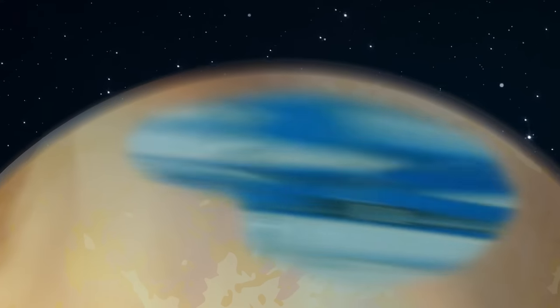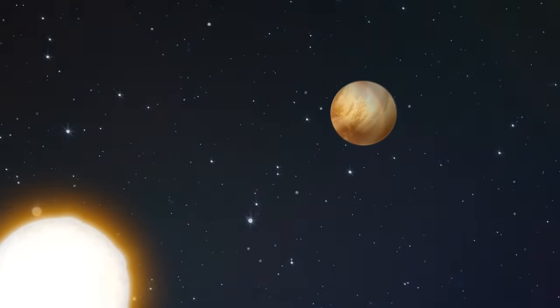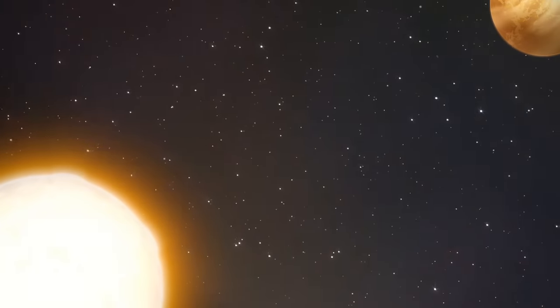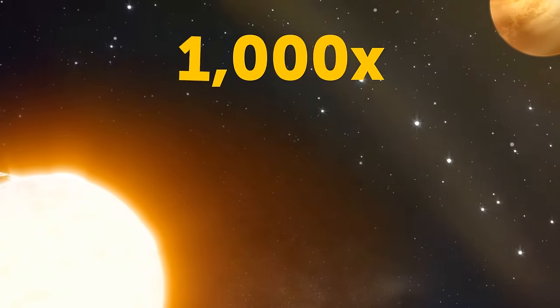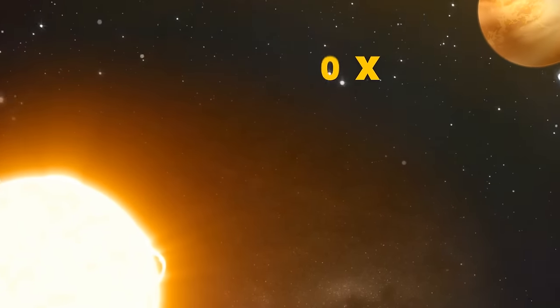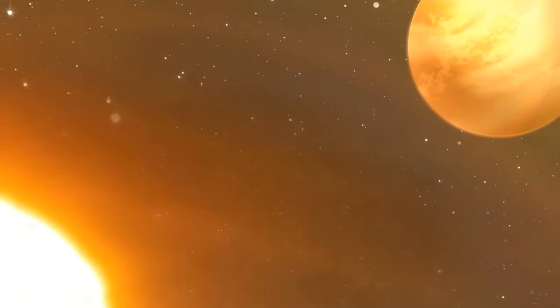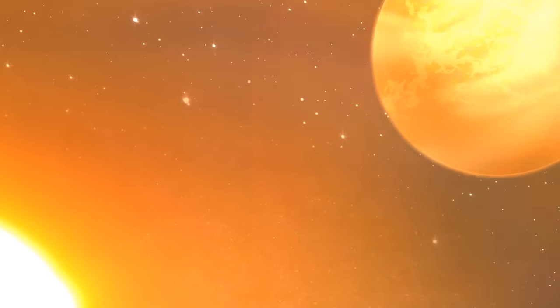The Voyager 1 space probe got to this point in December 2004. We're moving to the region where the heliosphere ends and interstellar space begins. This is the heliopause. In 2012, Voyager crossed this boundary and became the first ever human-made object in interstellar space.